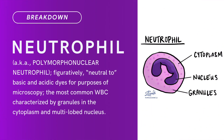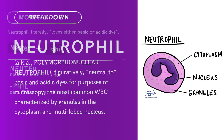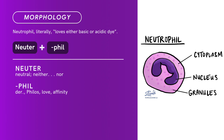Compound term: neutrophil, also known as polymorphonuclear neutrophil. Brief definition: figuratively neutral to basic and acidic dyes for purposes of microscopy. The most common white blood cells, characterized by granules in the cytoplasm and a multilobed nucleus. Term morphology: neutrophil literally means 'loves either basic or acidic dye.'